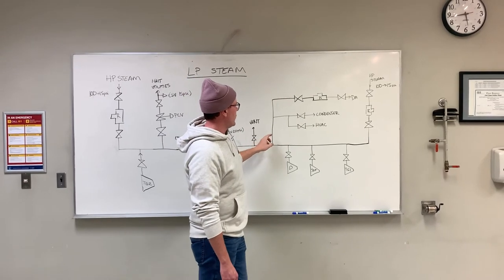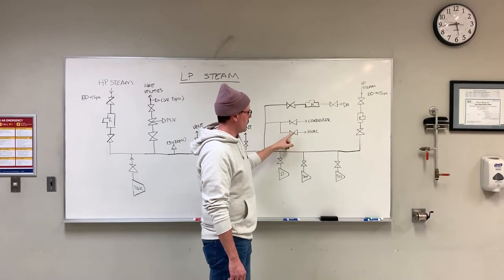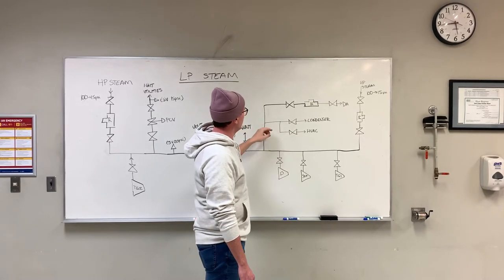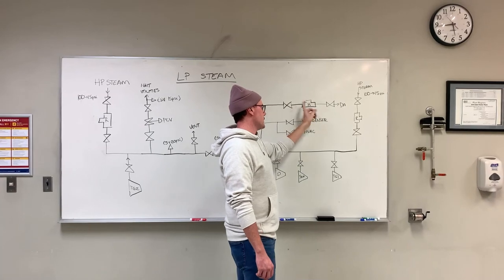Now it branches off here. It comes up. We have a branch that goes into the condenser. It also goes off over into the HVAC. Steam can come up and be regulated again before it heads over to the DA.